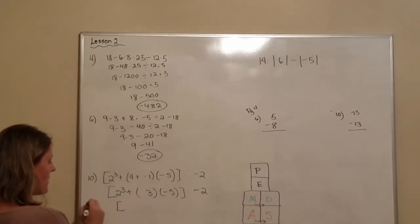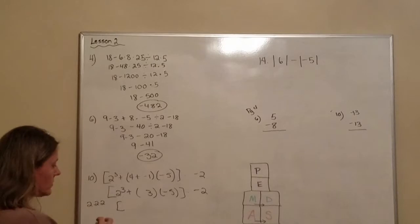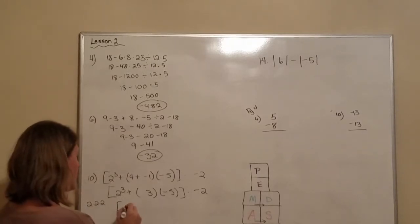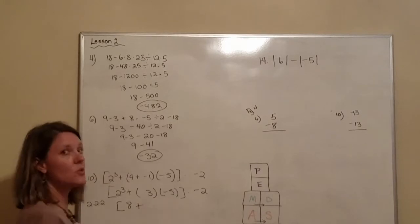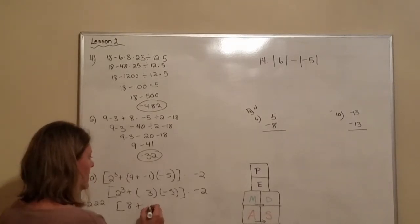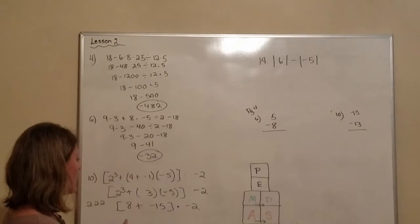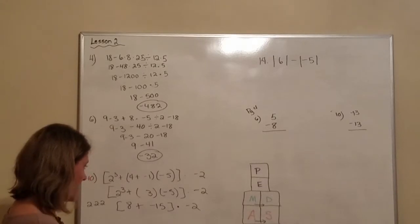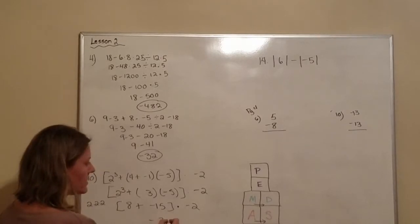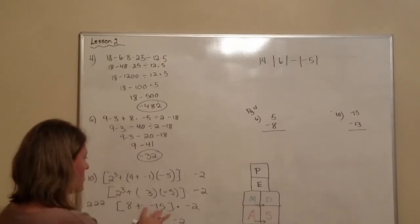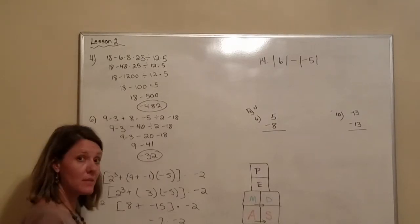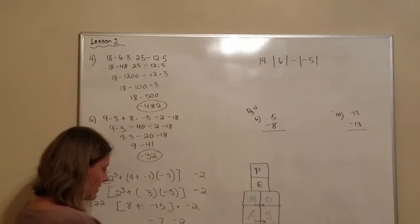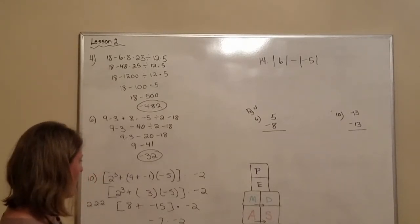Well that exponent is the same thing as 2 times 2 times 2. Well this is 4. 4 times 2 is 8. 8 plus, well what is 3 times negative 5? Negative 15. So now we can still simplify this. And 8 minus 15 is negative 7 times by negative 2. I was just making sure I'm right where I'm supposed to be. So a negative times a negative is positive. 7 times 2 is 14. So that is 14.